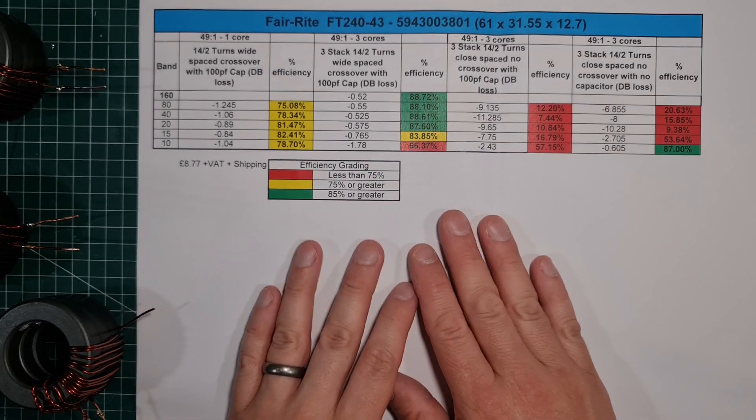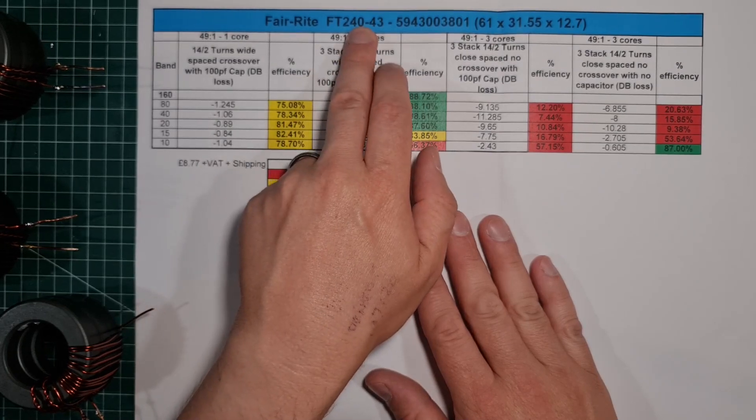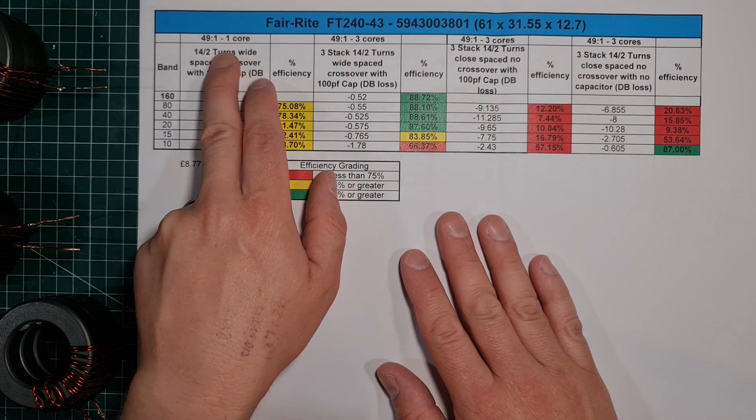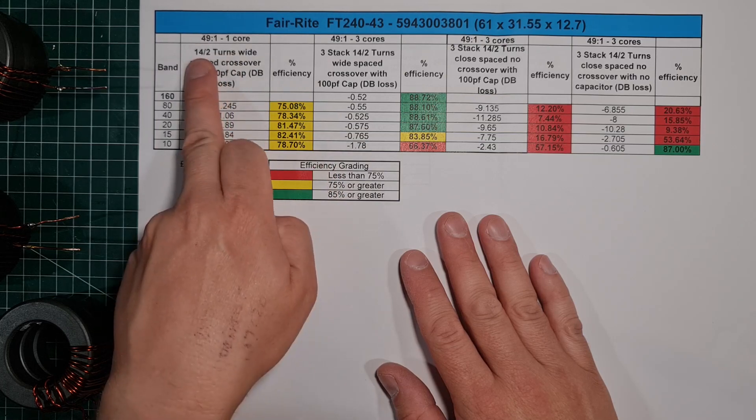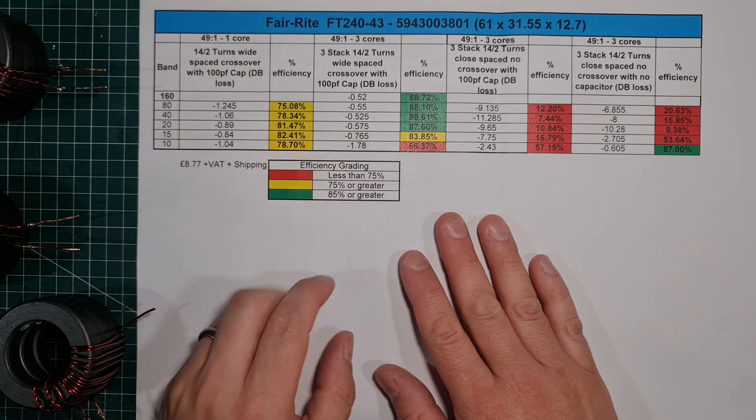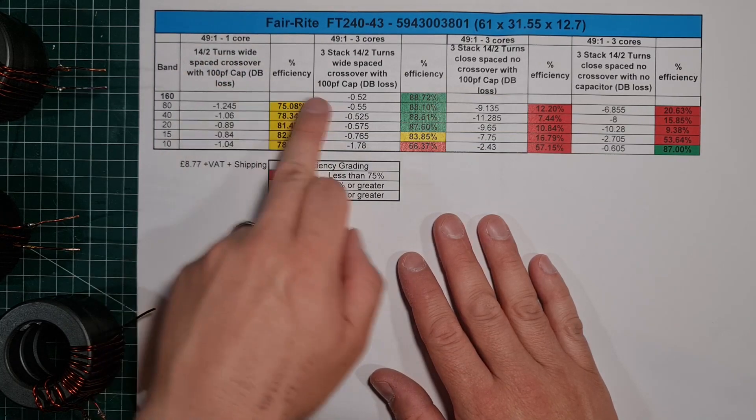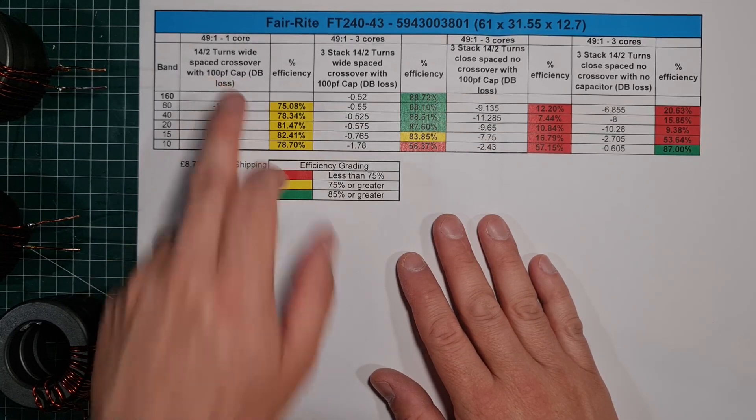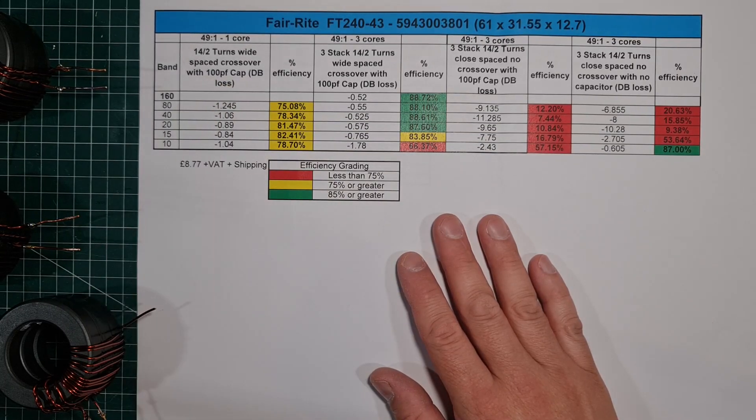What you're looking at here, as I said, 240-43. If you look at a standard 240-43 core, a 49-to-1, we've got two turns on the primary, 14 turns on the secondary, and most of these have actually got the 100 picofarad cap, which happens to be a TDK cap.